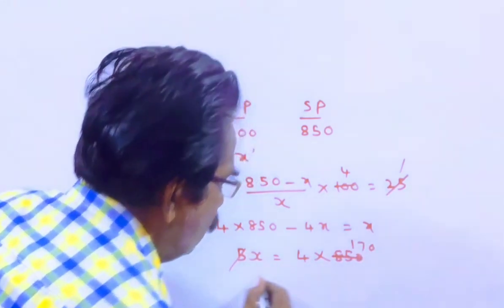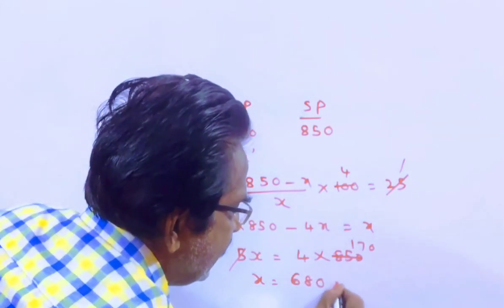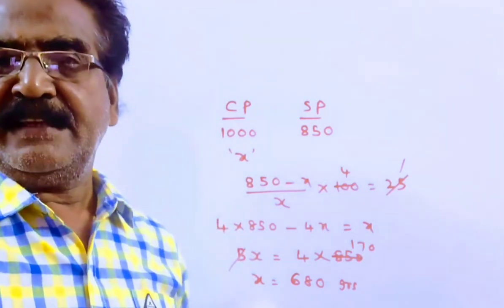So X equals 680 grams. He is using 680 grams for a kilogram. Thank you, friends.